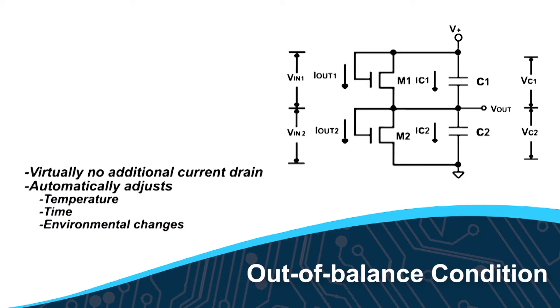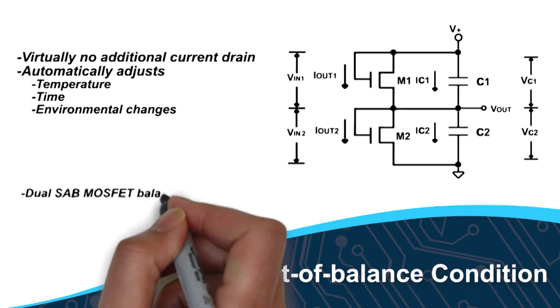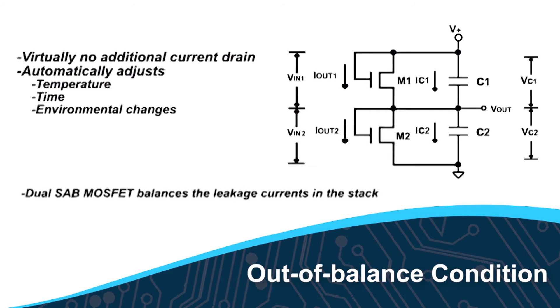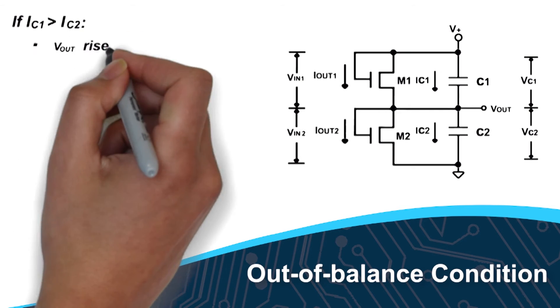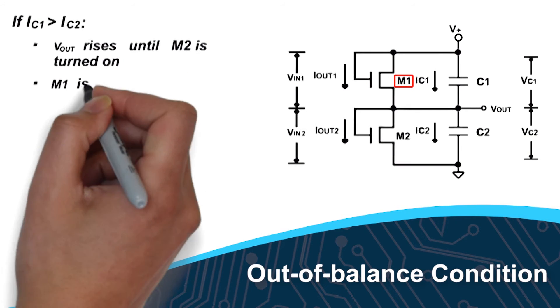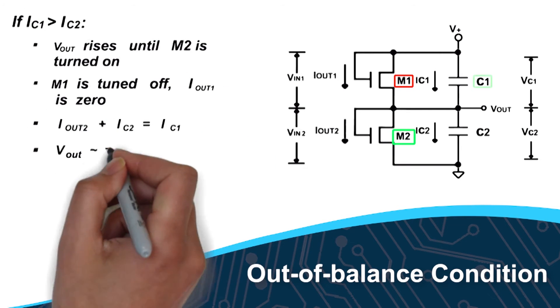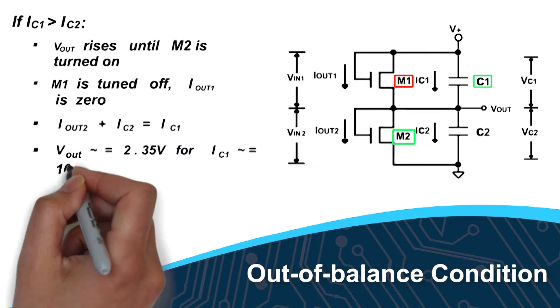In an out-of-balance condition, the dual SAB MOSFET functions to balance the leakage currents in the stack. For example, if IC2 is greater than IC1 then IOUT1 plus IC1 equals IC2, VOUT drops until M1 is turned off, and MOSFET M2 becomes the active circuit element to balance C1, the supercapacitor with the greatest leakage.